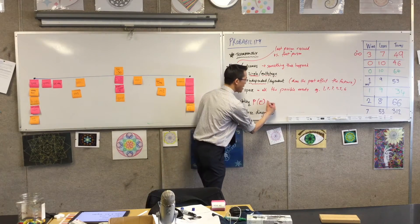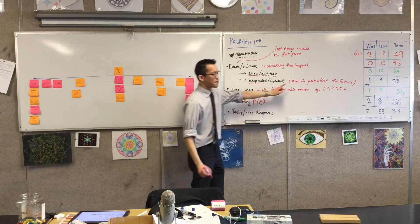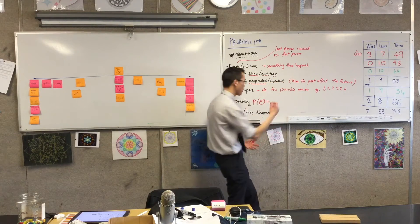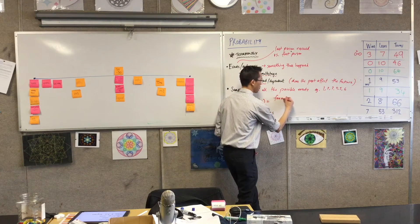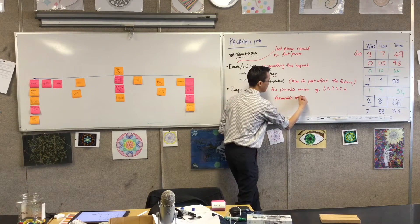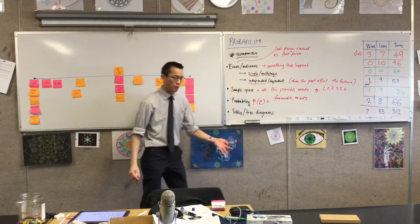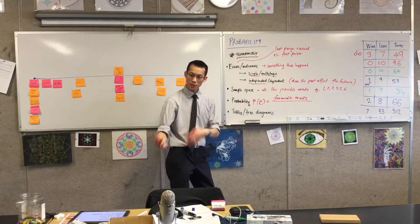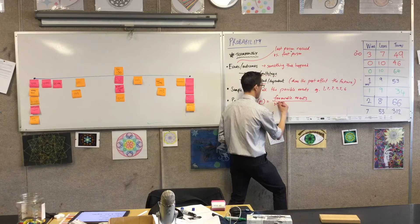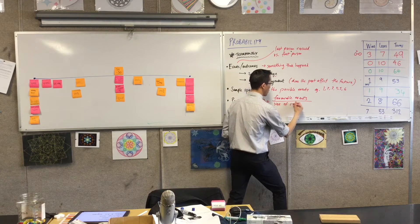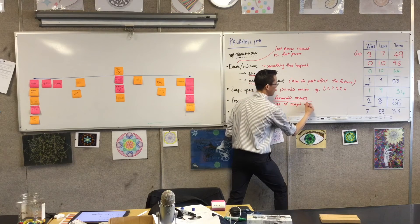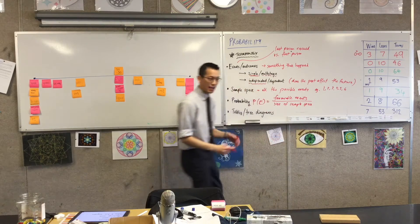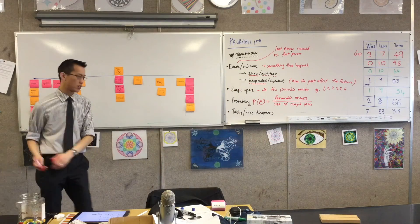It equals the events that you want - we call them the favorable events, like rescuing someone is a favorable event - the number of favorable events divided by the size of the sample space. That's how many different things could happen. You guys were all using that understanding as we were talking, even without the formal definition, because you're like "oh..."